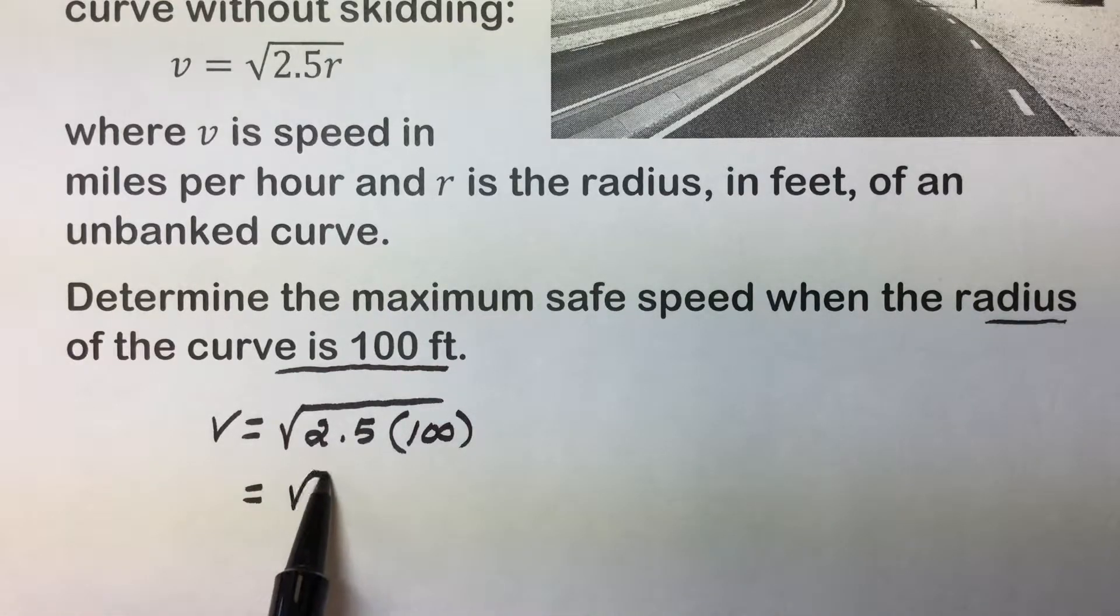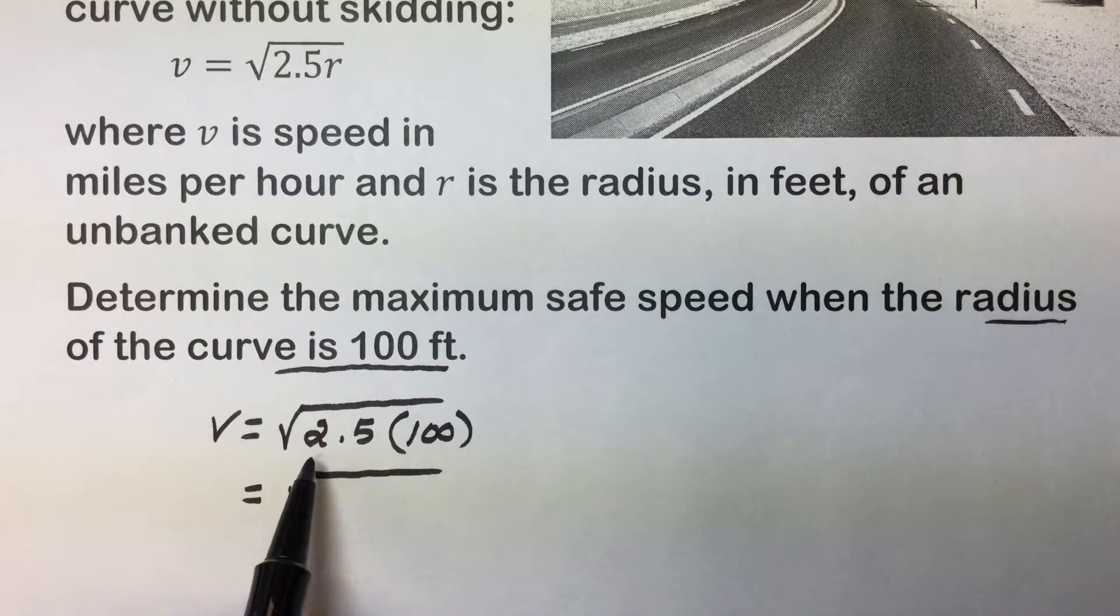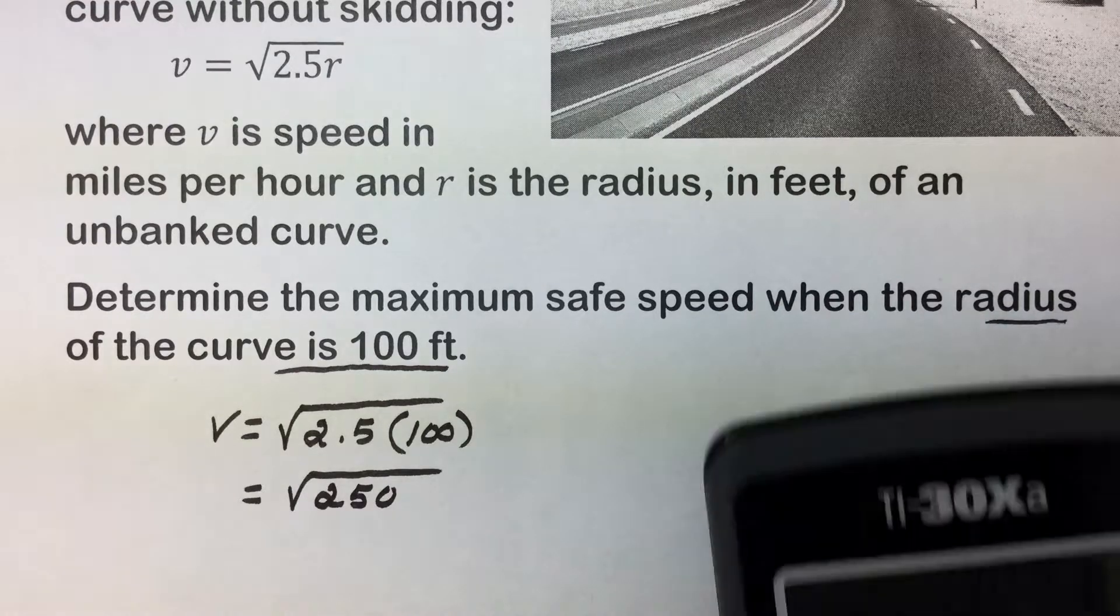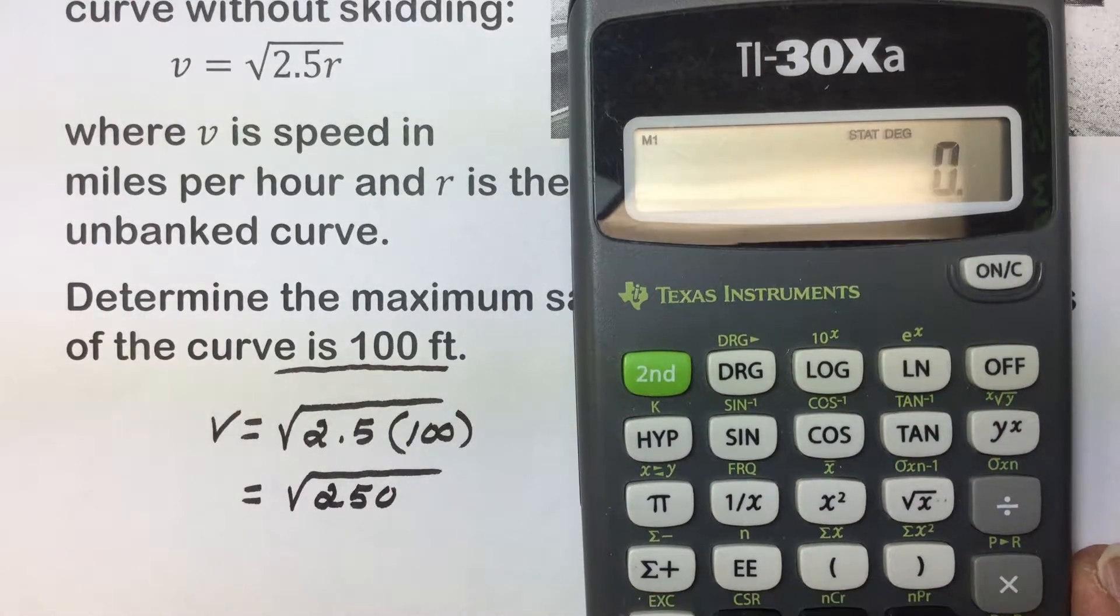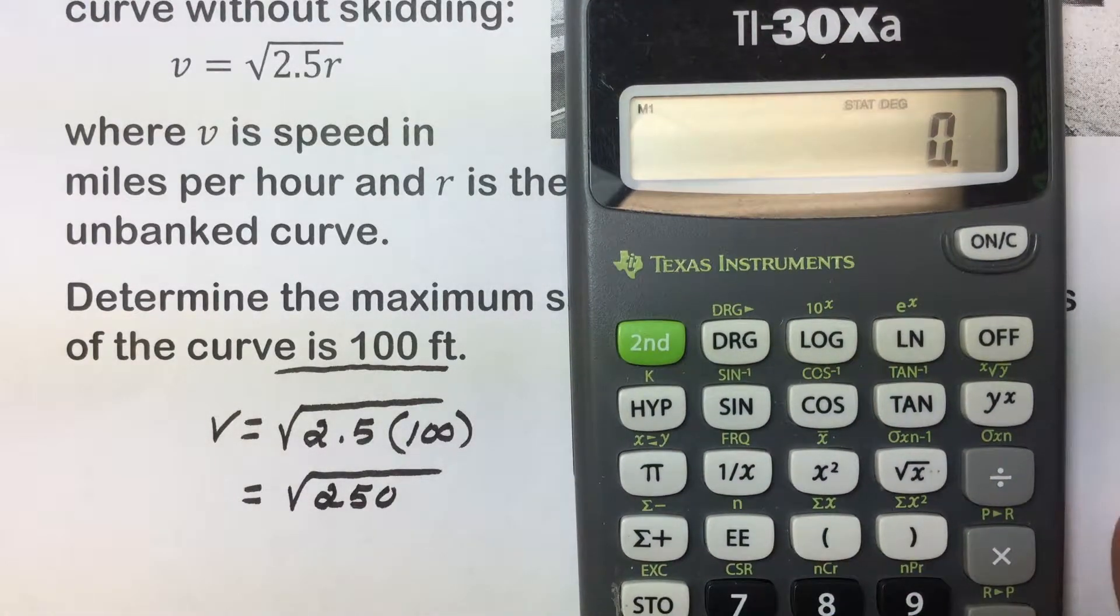Simplifying underneath the radical, we'll multiply. The product is 250. This is not a perfect square, so we'll use a calculator to determine an approximate value for the square root of 250.